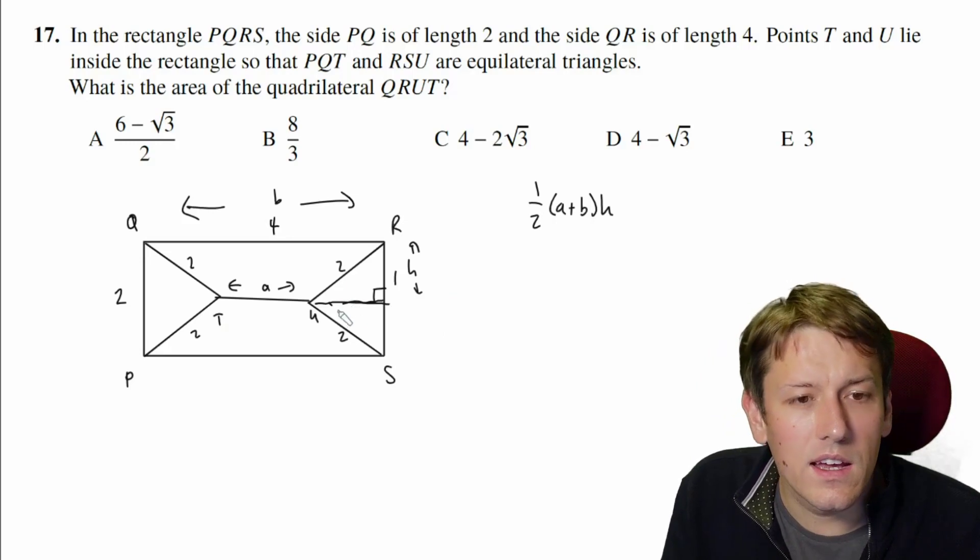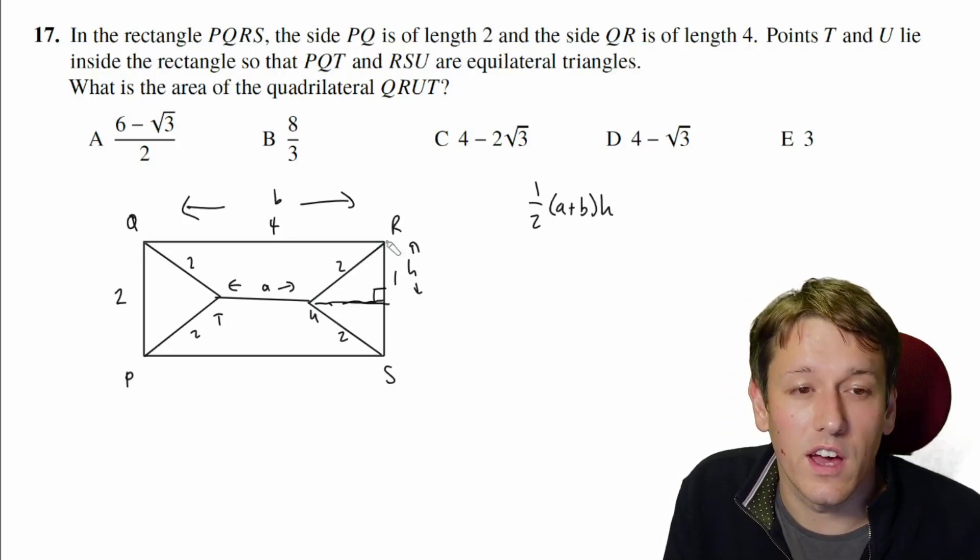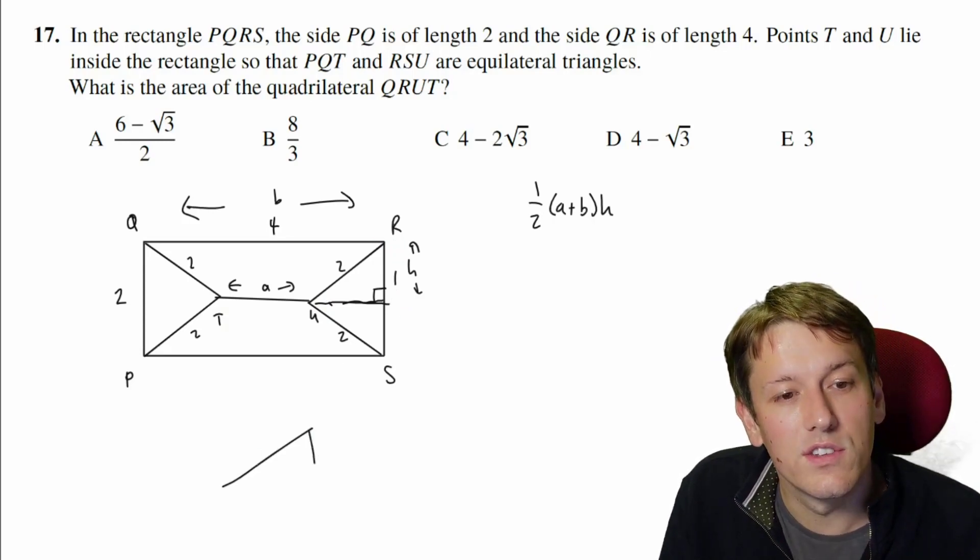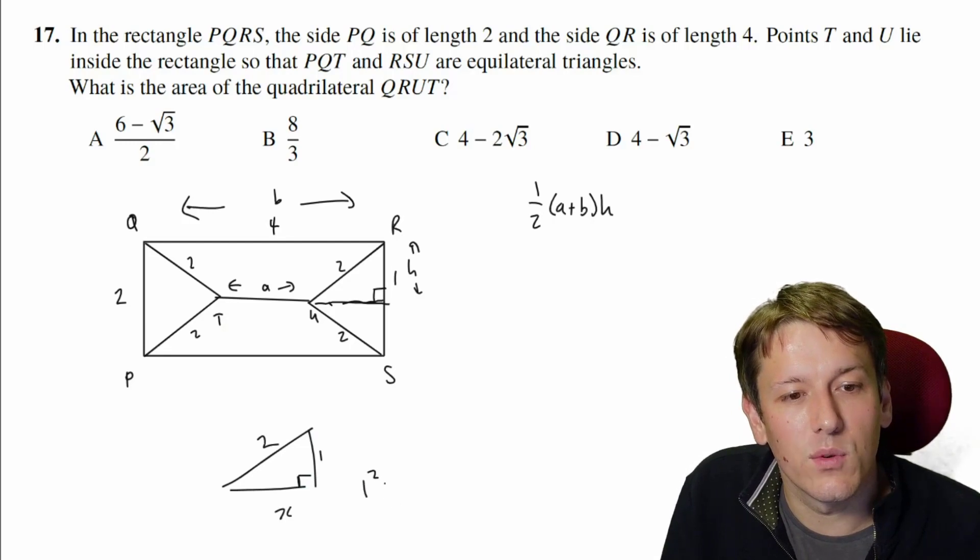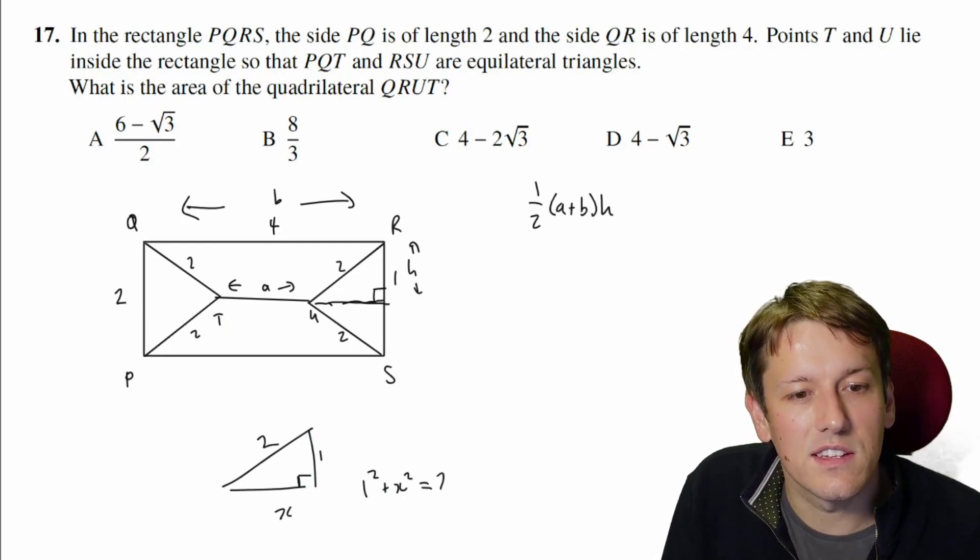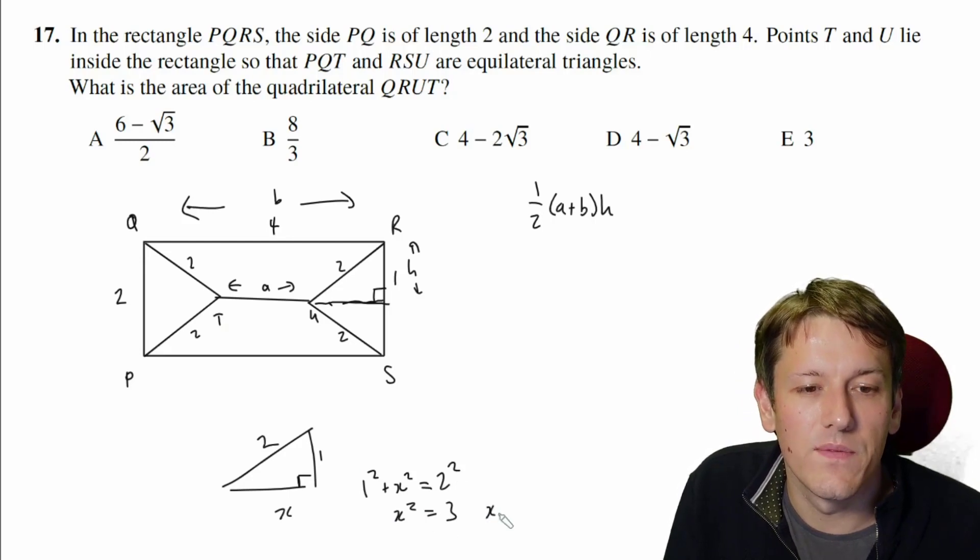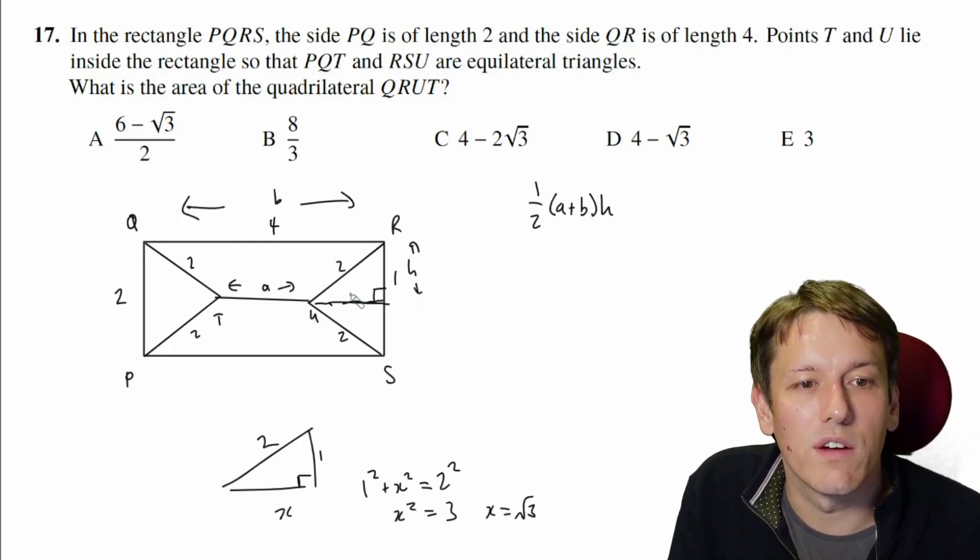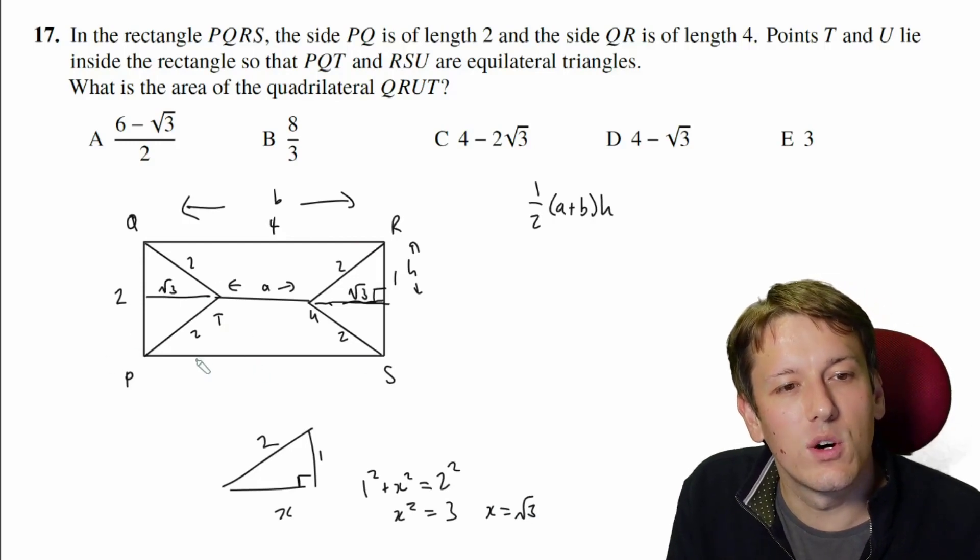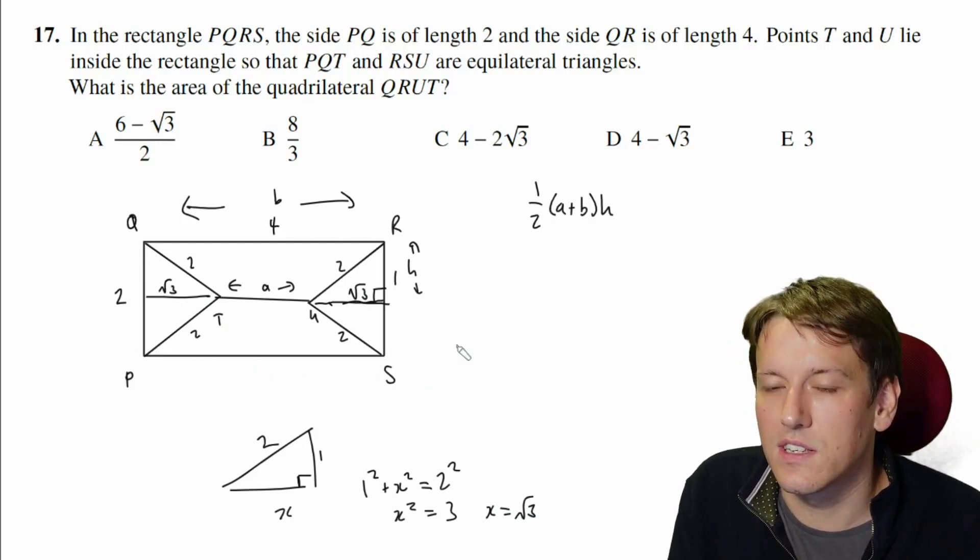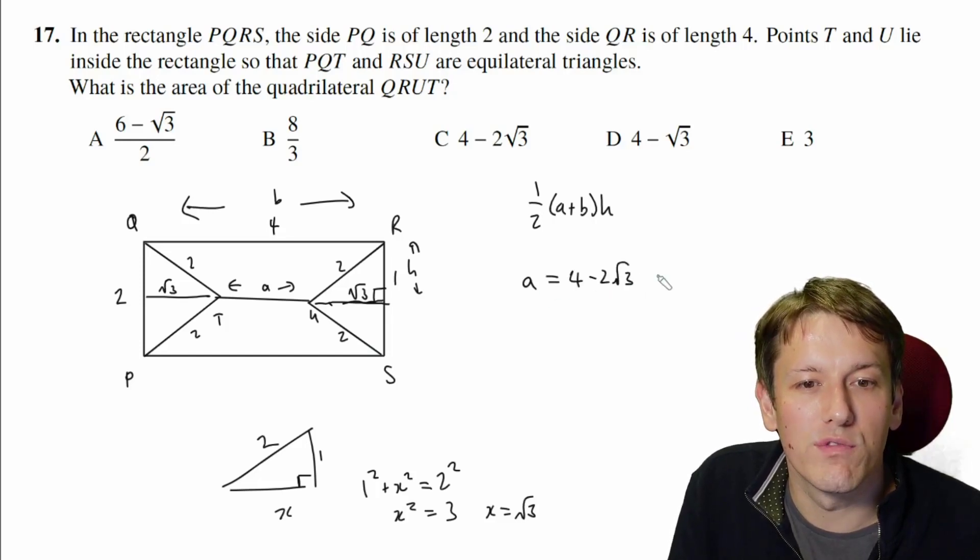And here we've got a right-angled triangle. We've got the hypotenuse is 2, and this side length is 1. So we can just apply Pythagoras' theorem here to say that 1² plus x² is 2², so x² is 4 minus 1, which is 3. So that side length would be the square root of 3. And we've got an identical situation on the other side here. So if the whole length of this rectangle is 4, then that side A would be 4 minus 2 lots of root 3.